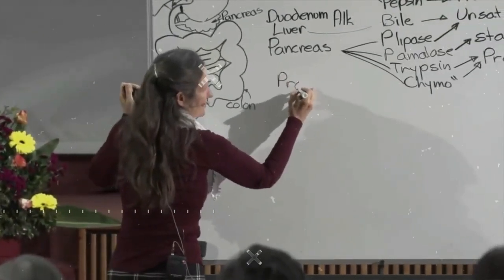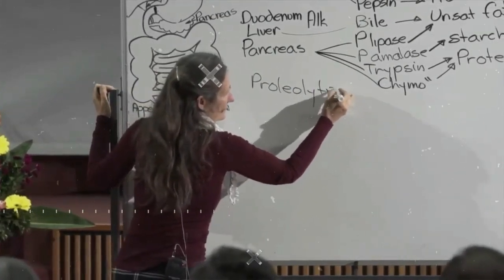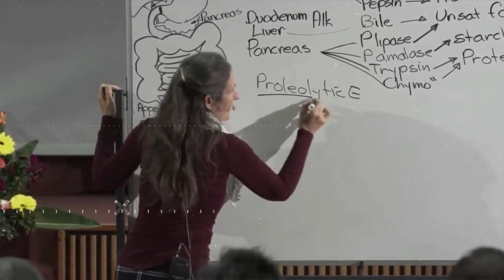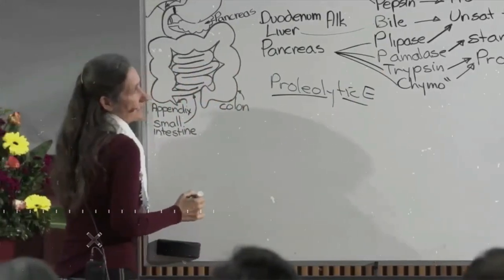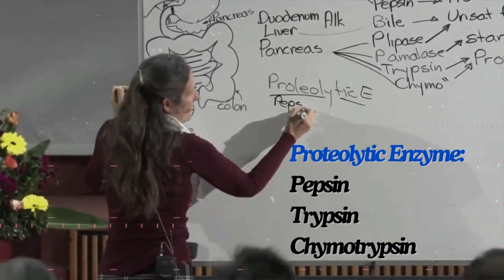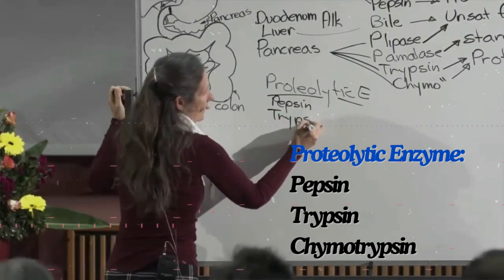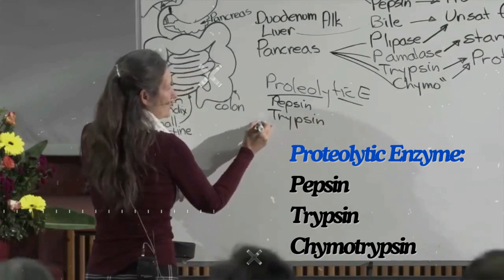Proteolytic enzymes are enzymes that break down protein. So a proteolytic enzyme is pepsin, trypsin, and chymotrypsin.